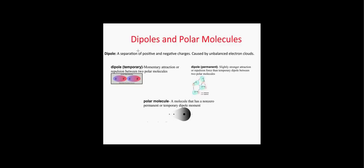Before we talk about secondary bonding, we should go over dipoles and what it means to be a polar molecule, because these are often what cause secondary bonding in a material. A dipole is a separation of positive and negative charges, caused by unbalanced electron clouds. There are two types of dipoles — basically two ways that electron clouds can be imbalanced: temporary dipoles and permanent dipoles.